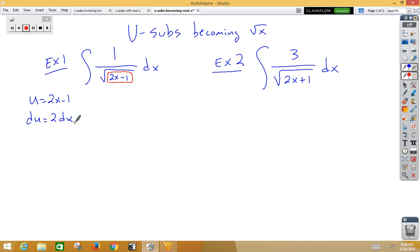We don't have a 2dx, but if we multiply the inside by 2 and then divide the outside by 2, then we would have what we need. We have 1 half integral, 1 over, the inside became root u, the outside part, 2dx, became du.